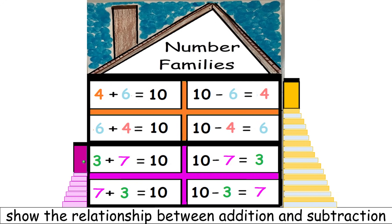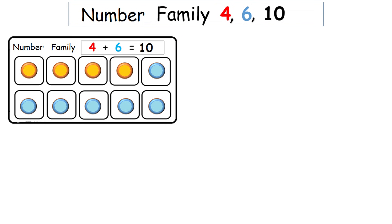Number families show the relationship between addition and subtraction. Each number family is a combination of numbers that fit together. Introduce kids to the number family that has a combination of three numbers: 4, 6, and 10. In this example of a base 10 frame, 4 plus 6 equals 10 — 4 circles plus 6 circles equals 10 circles.